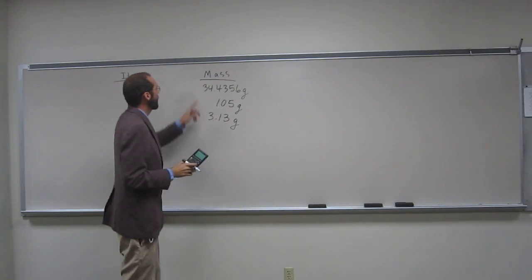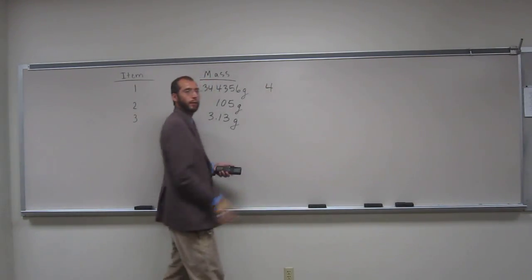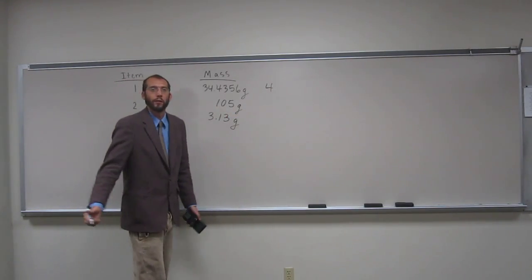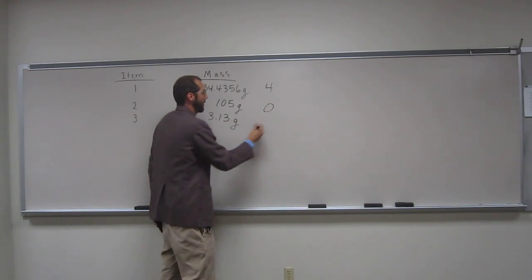So, if we look here, this one has, what, four after the decimal point? Does everybody see that? How many does this one have after the decimal point? Zero. And this one? Two.